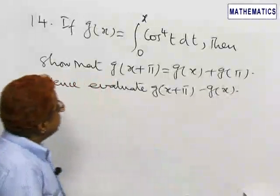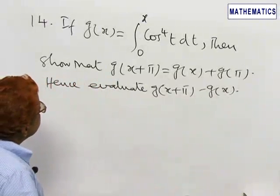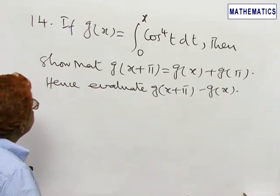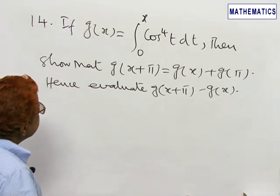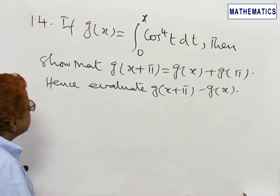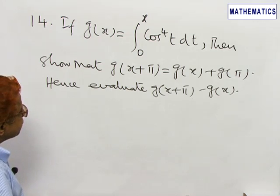Next problem: If g(x) is the integral from 0 to x of cos to the power 4 of t dt, then show that g(x + π) equals g(x) + g(π). Hence evaluate g(x + π) minus g(x).